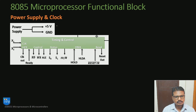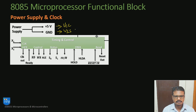Let me start with the demonstration of the power supply and clock block. This microprocessor is powered with a plus 5 volt DC supply. This plus 5 volt pin is called the VCC pin and there is a ground pin represented as VSS.